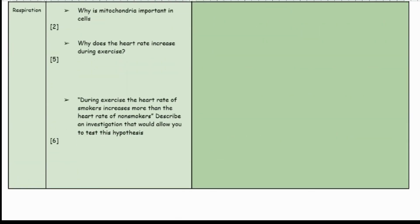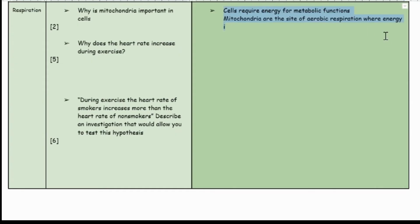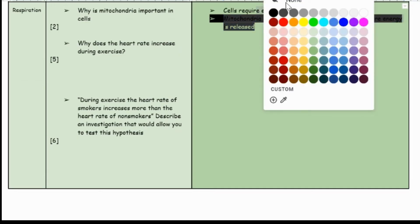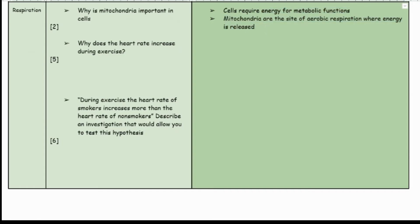Let's move on to the next topic: respiration. Why is mitochondria important in cells? This is a two marker. Cells require energy for metabolic function, and mitochondria are the site of aerobic respiration where energy is released. A key point is that mitochondria does not create energy — mitochondria releases energy. You can actually lose a mark by saying 'creates' instead of 'releases', because energy cannot be created or destroyed — it is just released.